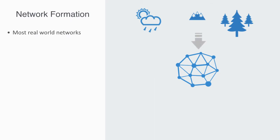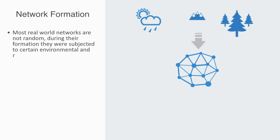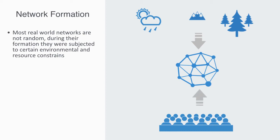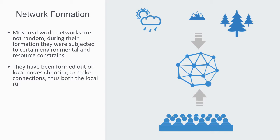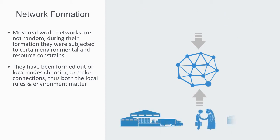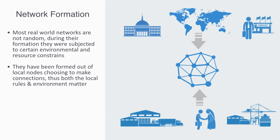As we've previously noted, most real-world networks are not random. During their formation, they were subject to certain environmental and resource constraints that shaped their formation as they developed in a particular non-random fashion. Added to this, most economic networks are user-generated — they have been formed out of local nodes choosing to make connections. Thus, both the local rules under which agents are making these connections and the environmental constraints they're under are both defining factors in the network's formation. So if this is a trade network, we need to know what are the physical constraints and the socio-political constraints that are inhibiting the formation of the network, and inversely, what are the set of rules under which agents are choosing to make connections.